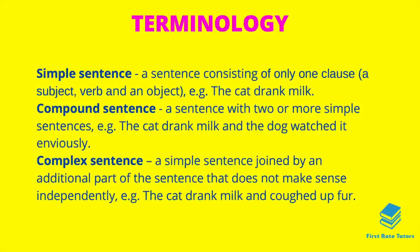A simple sentence consists of one clause with a subject and object, for instance 'the cat drank milk'. A compound sentence joins two or more simple sentences with a conjunction — for example, 'the cat drank milk' joined with 'and' to 'the dog watched it enviously'. A complex sentence is a simple sentence joined by an additional clause that does not make sense independently, such as 'the cat drank milk and coughed up fur', where 'coughed up fur' relies on the first clause to make sense.